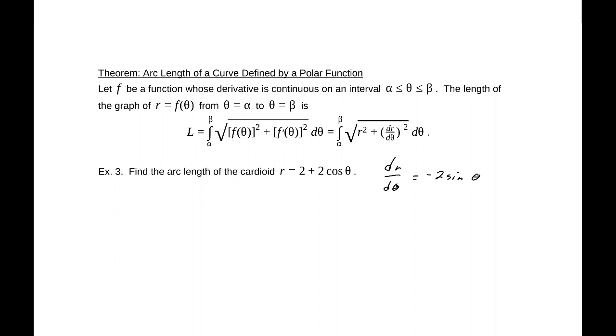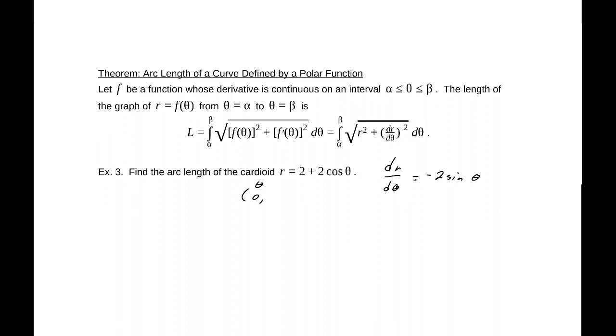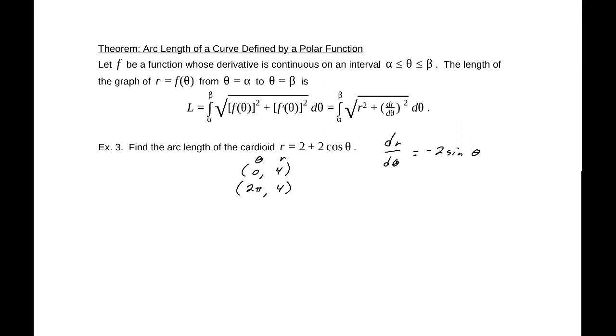To find our interval, alpha to beta, if we deal with the function r = 2 + 2cos(θ), if we evaluate this at θ = 0, this is the point (0, 4). I'm not going to do this here, but I suggest you make a table. You find that this starts to return back at 2π. That's really just because cosine is cyclic in that way. If we looked at a table, we could see it actually starts repeating itself at that point. So we have a starting point of 0 in terms of theta and an ending point of 2π.